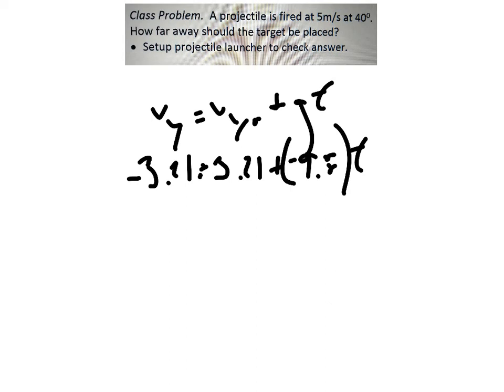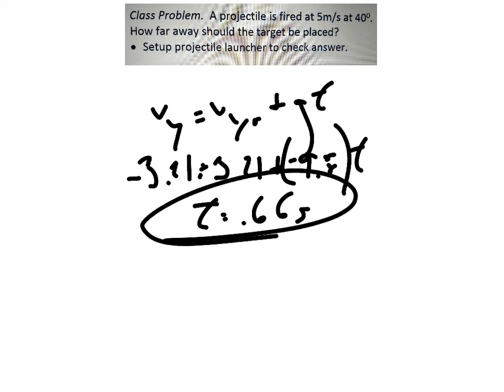Subtract this to the other side. We get a negative 6.4 something. Divide by a negative 9.8. The negatives cancel out. And you get a T, a fall time, of 0.66 seconds. So that projectile was in the air for 0.66 seconds. That's one way to get T. So let me be very clear. That's one way. You don't have to do it that way. That's just one option.